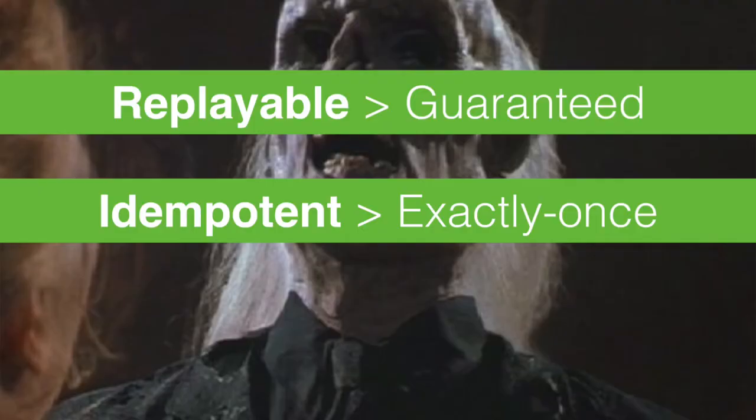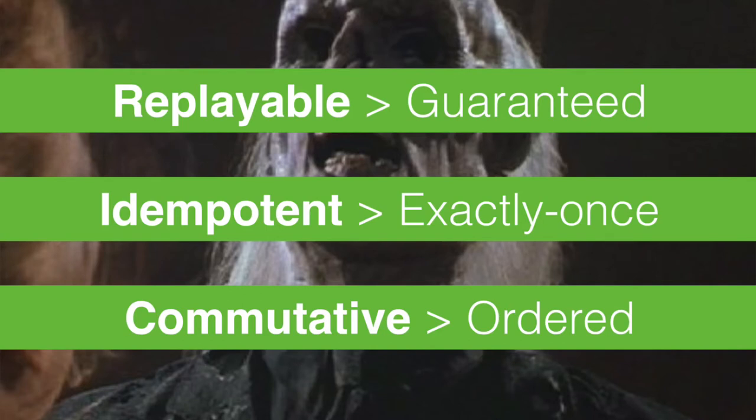We have to step back and rethink how we design these types of systems. If we think about replayability — the fact that we can just retry or replay messages — we don't care about guaranteed delivery. If we think about idempotence and the fact that messages can be safely retried, we don't care about exactly-once delivery. If we think about commutativity and the fact that messages can be reordered, we don't care about ordered delivery. If we can think about our systems in that mindset, we can build much more resilient and robust systems. Things have fundamentally shifted — we're building in the cloud with microservices.